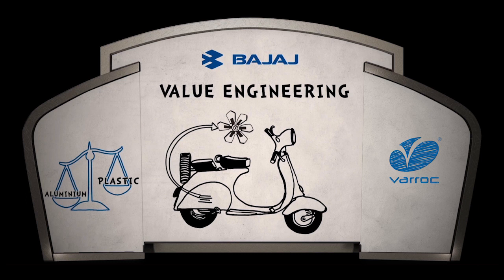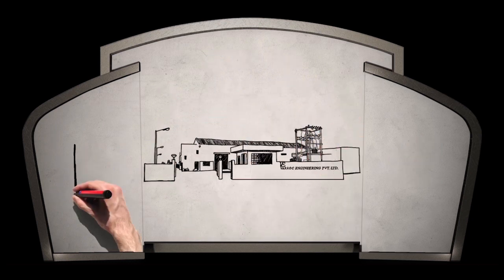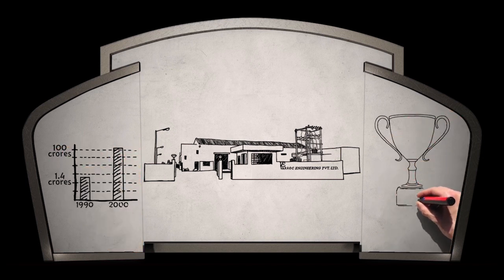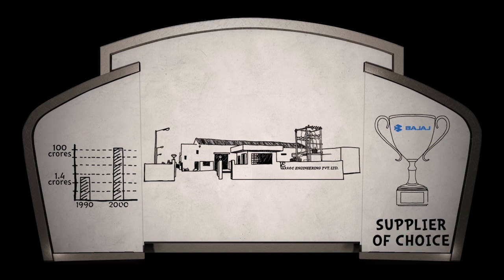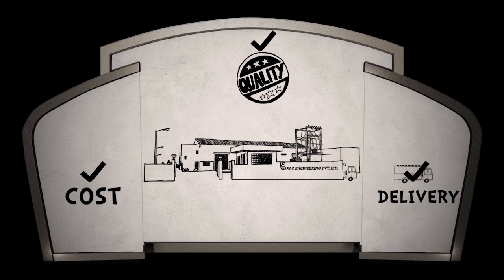There was no looking back. And by 2000, with a 100 crore turnover, Varok established itself as the supplier of choice for plastic components to Bajaj. This first decade was primarily about establishing cost, quality, and delivery.